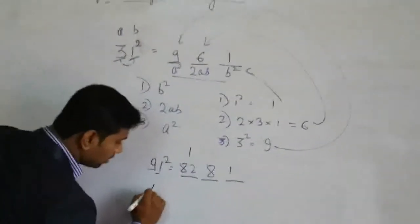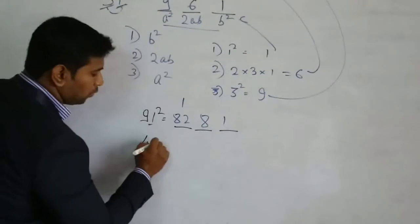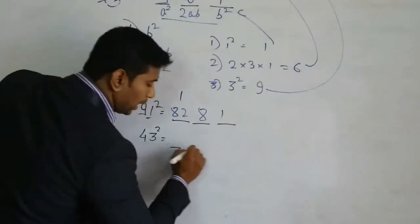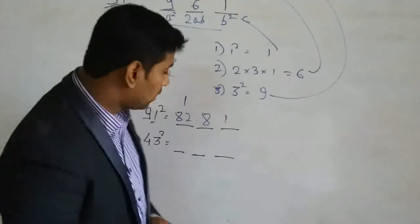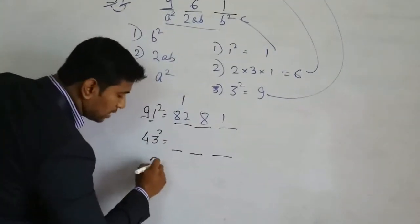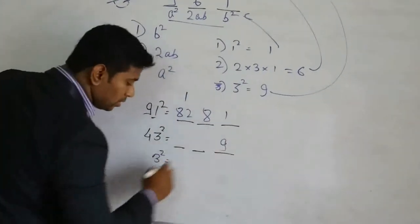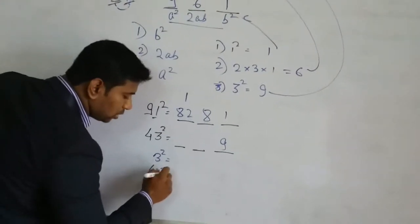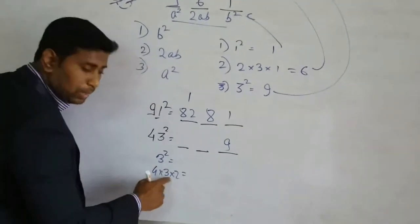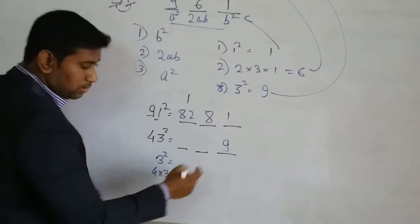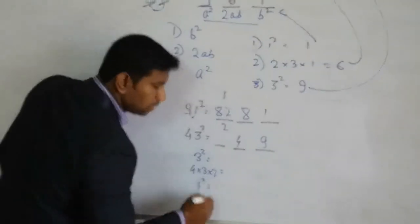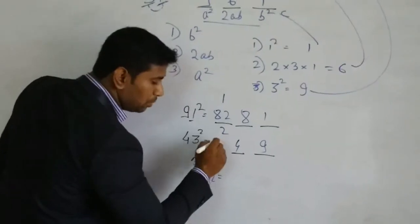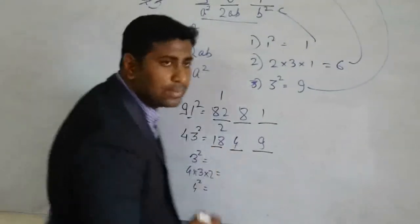Let us see some more examples. That is 43 square. Now this time you will have to tell me the answer. Now tell me, first, this time 3 square, 9. Then 4 into 3 into 2, 24, 4, 2 carry. Then 4 is square, what? 16 plus 2, 18. So here we have the answer.